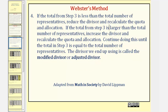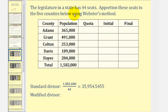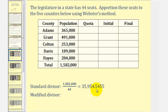Let's take a look at our first example. The legislature in a state has 44 seats. We want to apportion these seats to the five counties below using Webster's method. We begin by finding the standard divisor. We find the sum of all the populations, which is 1,582,000. We divide this by the number of seats, which is 44, giving us the standard divisor of 35,954.5455.